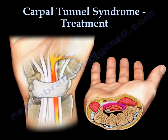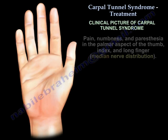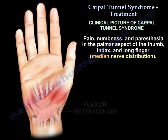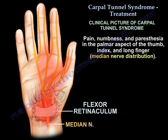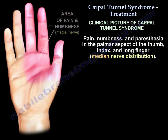Carpal Tunnel Syndrome Treatment. The clinical picture of Carpal Tunnel Syndrome: usually the patient will complain of pain, numbness, and paresthesia in the palmar aspect of the thumb, index, and long finger. It is at the median nerve distribution.